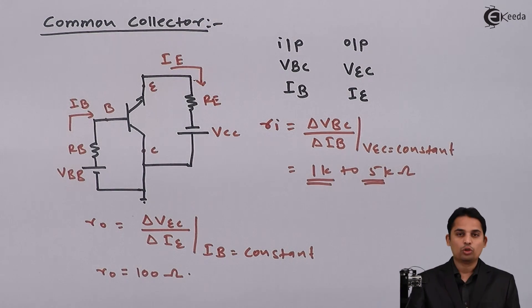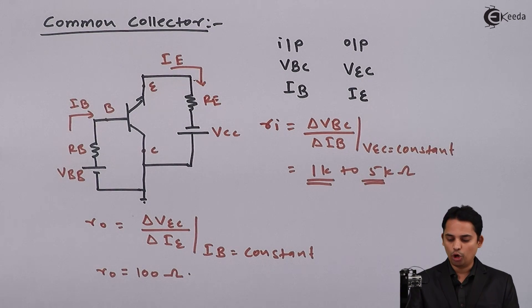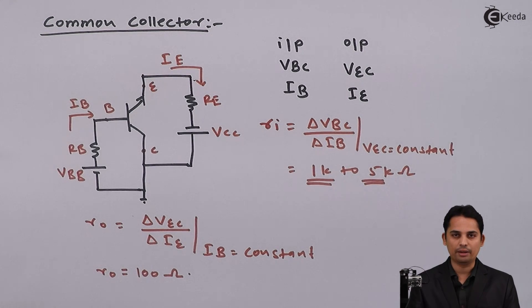We have covered input impedance and output impedance characteristics. The current gain in the case of the common collector amplifier is very high.